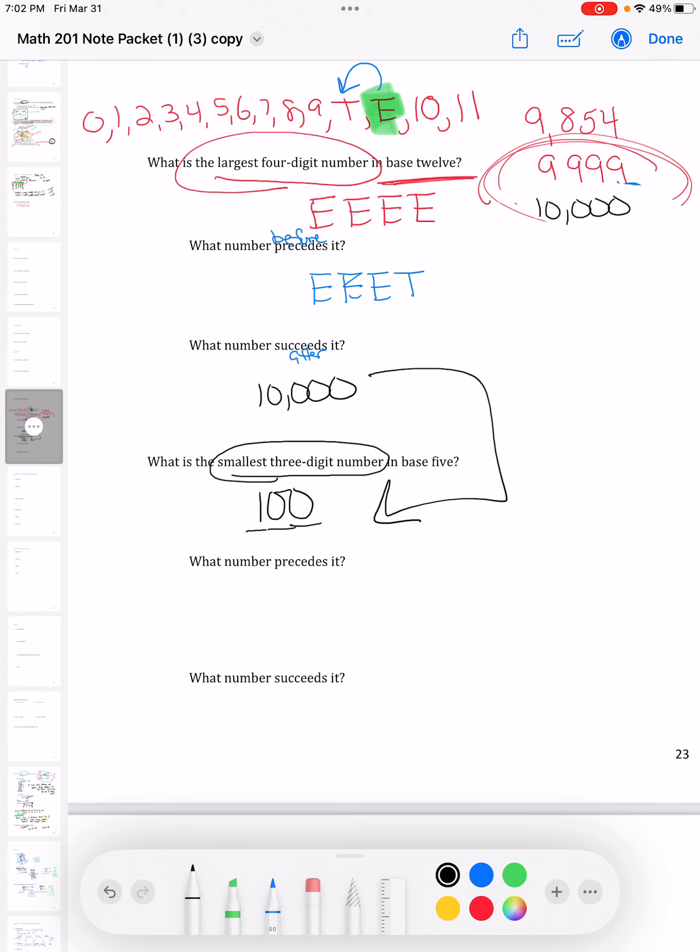So the smallest three-digit number in base five is 100. The smallest three-digit number in base 12 is 100. That 1, 0, 0.